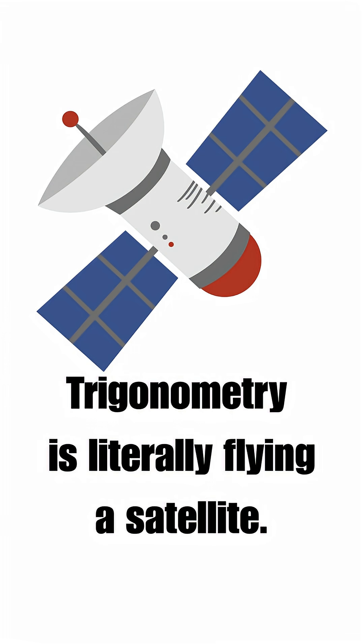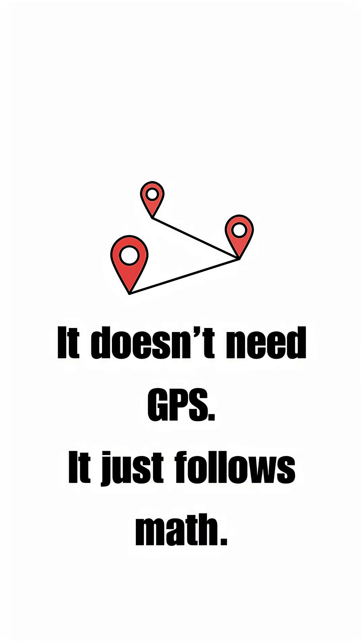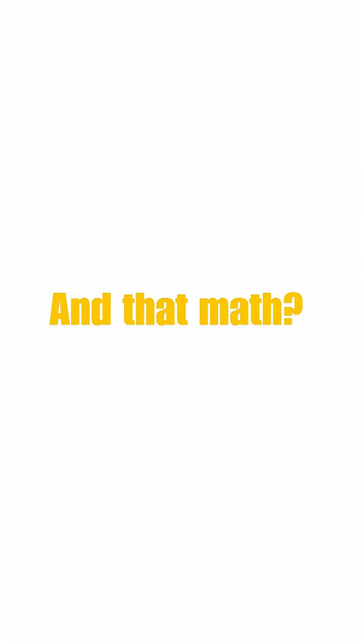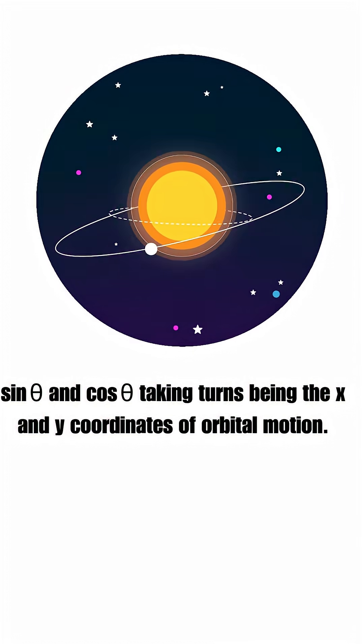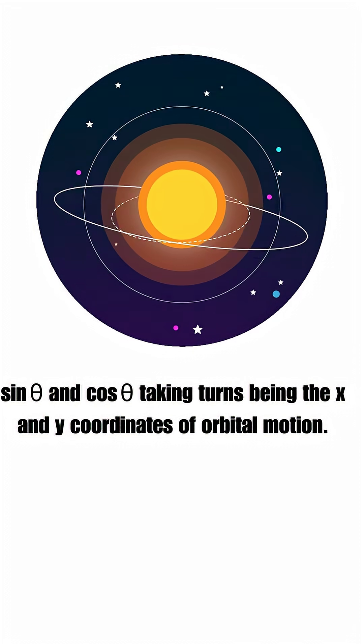Trigonometry is literally flying a satellite. As theta increases, the satellite moves. It doesn't need GPS. It just follows math. And that math? Sine theta and cosine theta taking turns being the x and y coordinates of orbital motion.